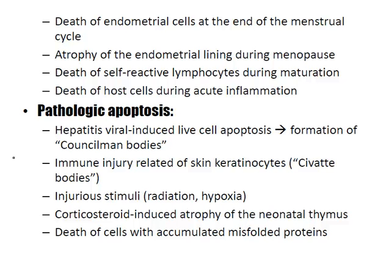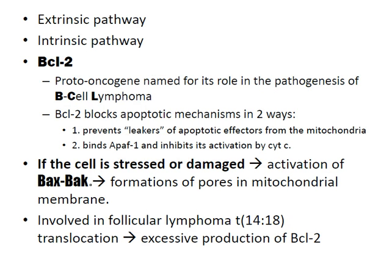Pathologic apoptosis includes hepatitis viral-induced liver cell apoptosis, which leads to formation of Councilman bodies. Immune injury-related apoptosis of skin keratinocytes is known as civatte bodies. Other causes include injury stimuli like radiation and hypoxia, corticosteroid-induced atrophy of the neonatal thymus, and death of cells when accumulated misfolded proteins accumulate.